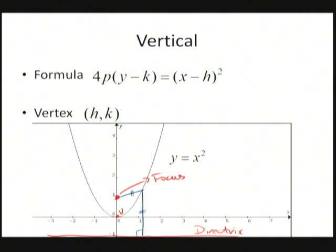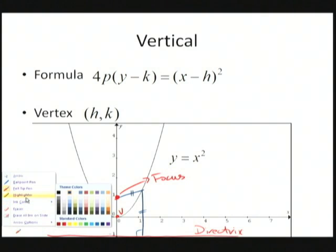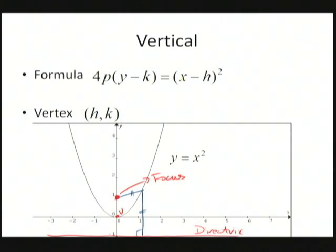Hopefully you wrote down the vertical formula. What I want you to notice here is that in the vertical one which goes up and down, we see that X is the quadratic term, which is what we're used to, especially in the most basic parabolic formula which is y = x².